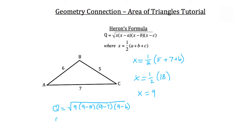So Q is equal to the square root of nine times nine minus five, which is four, times nine minus seven, which is two, times nine minus six, which is three.